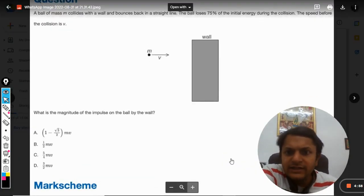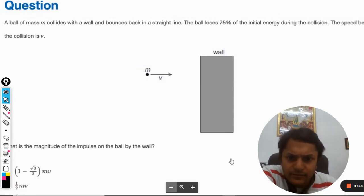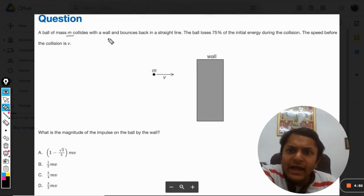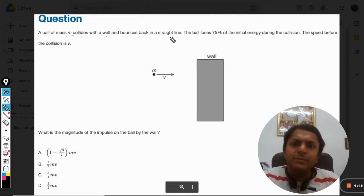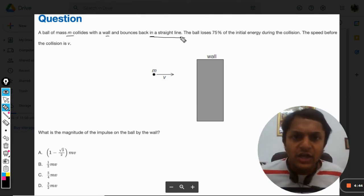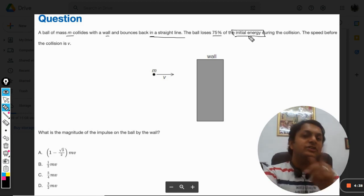Okay, so let us see what is this question now. A ball of mass m collides with a wall and bounces back in a straight line, so it is not changing its direction. The ball loses 75 percent of its initial energy. It's not talking about initial velocity.